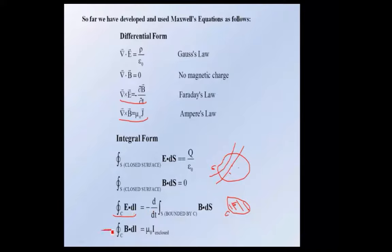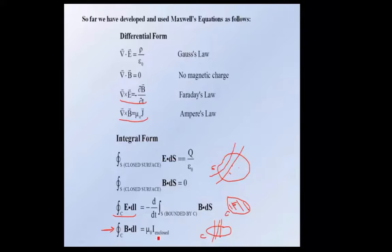Here's Ampere's law in the form you're used to. You take a line integral of B dot dl around a path C, and if you have current passing through the enclosed surface, the total current is I enclosed. So the line integral of B equals mu zero times I enclosed. That was useful for symmetric systems to actually find B.